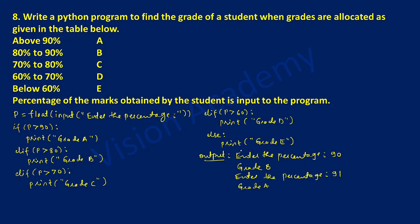Next you can check out the else part. If the percentage is below 60, then it should display grade E. We will execute this program one more time. It will ask the user to enter the percentage. Now I am going to enter 60. So here P is holding value 60. Whether 60 is greater than 60 — no, condition is false. The else part will get executed, so it is going to print grade E.